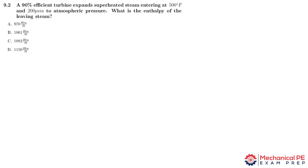I'm going to go a little bit faster through some of the details because the process is exactly the same: we assume that the entropy at state 2 is equal to the entropy at state 1 for the ideal case first, then find the quality, find the enthalpy, and use the efficiency at the end to figure out the actual delta h or the actual enthalpy at state 2.